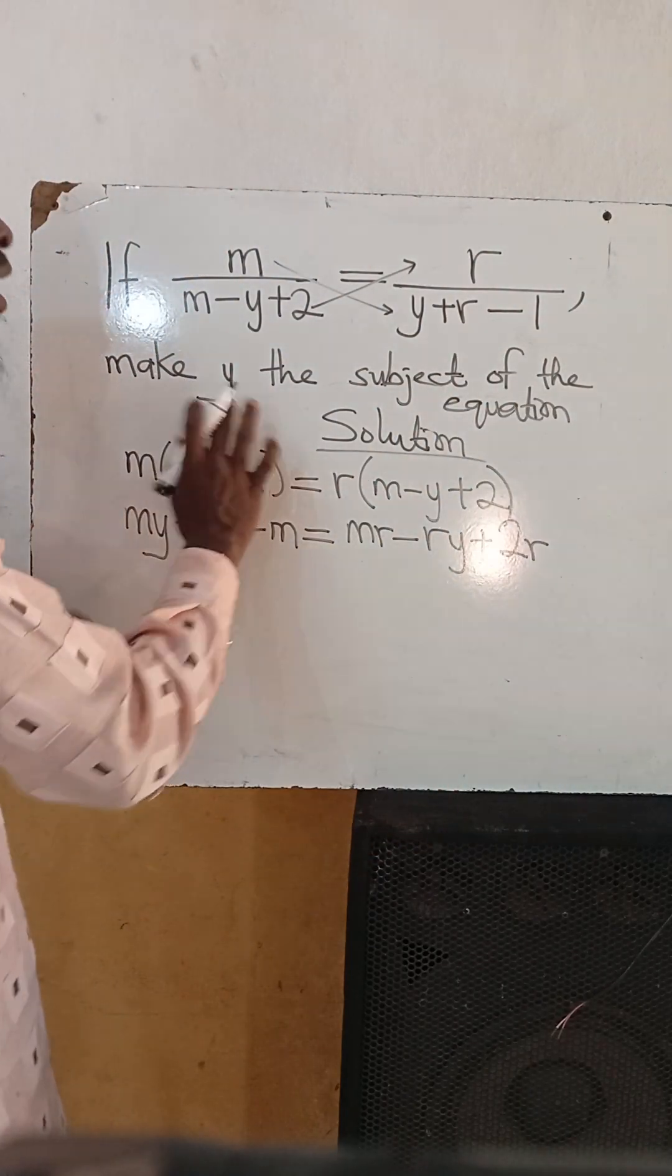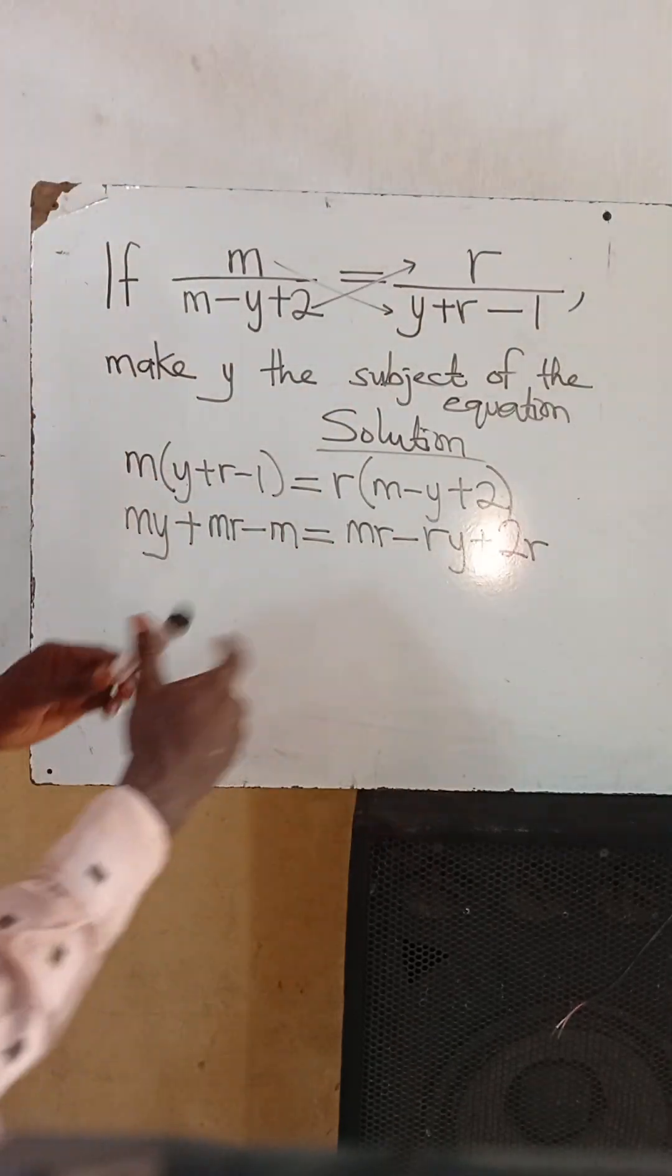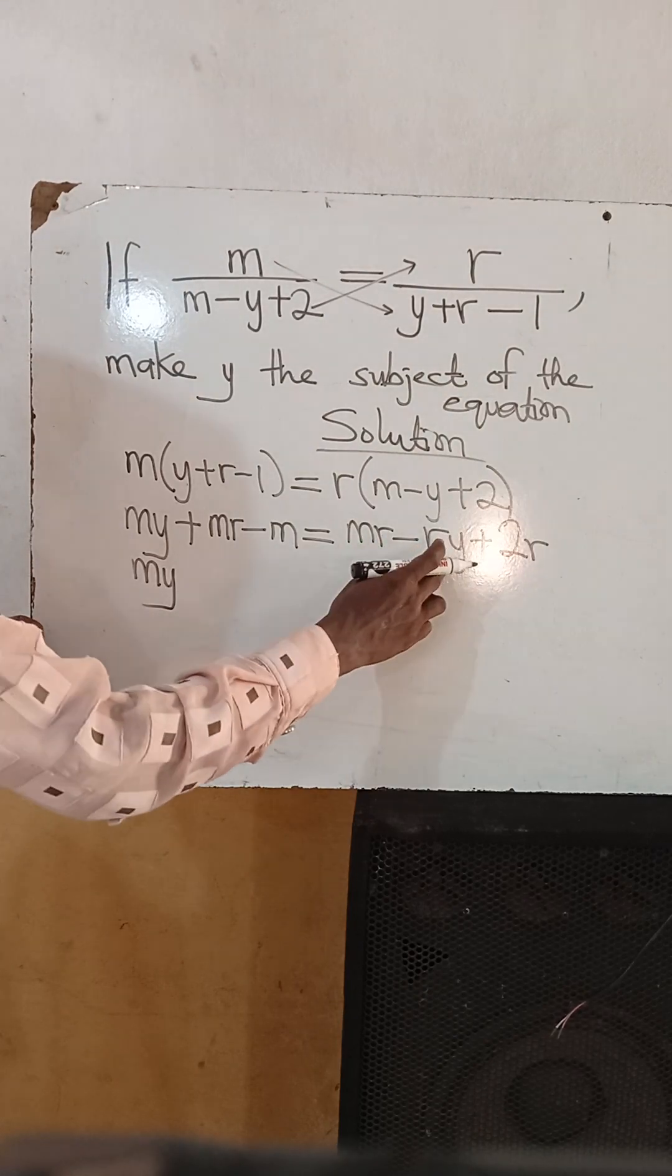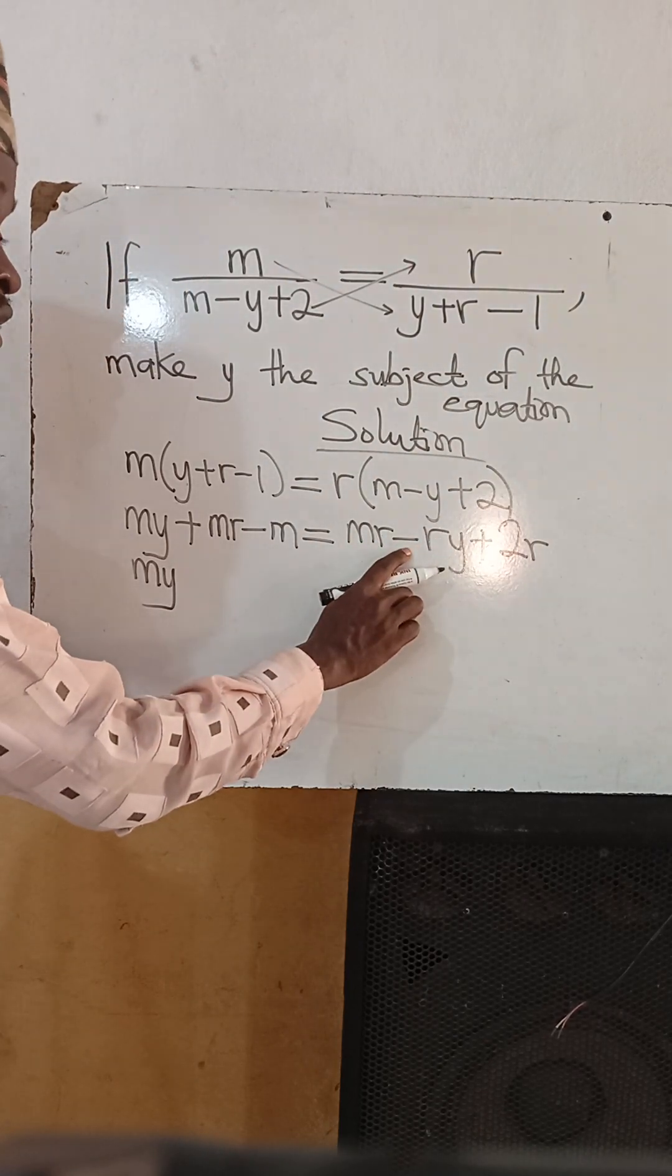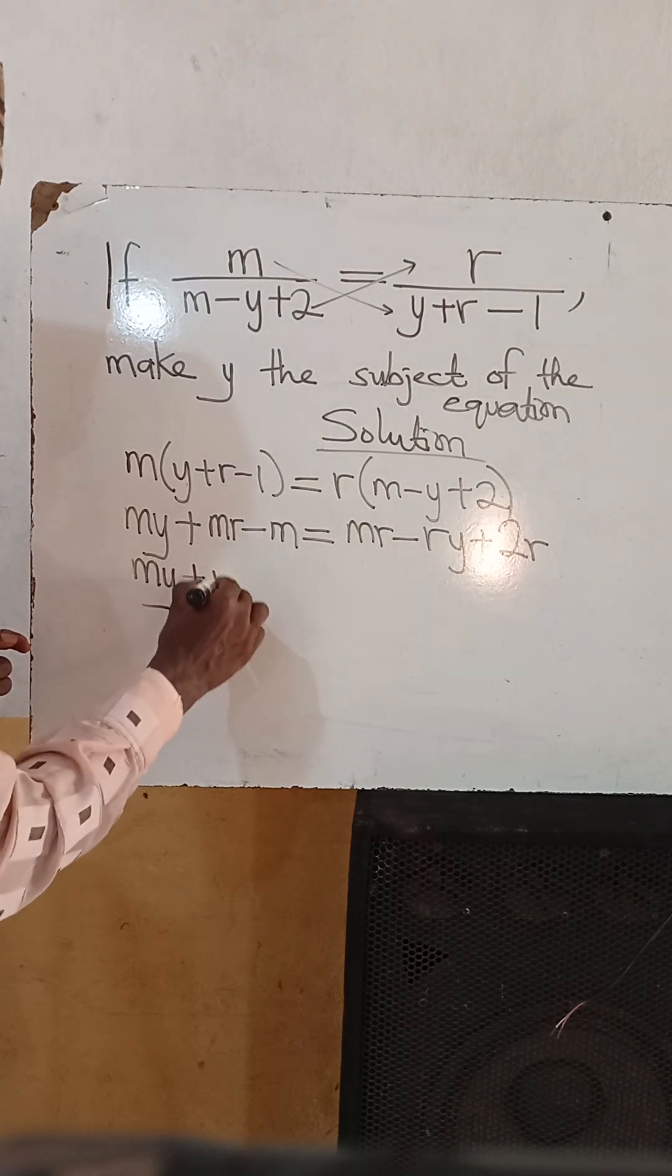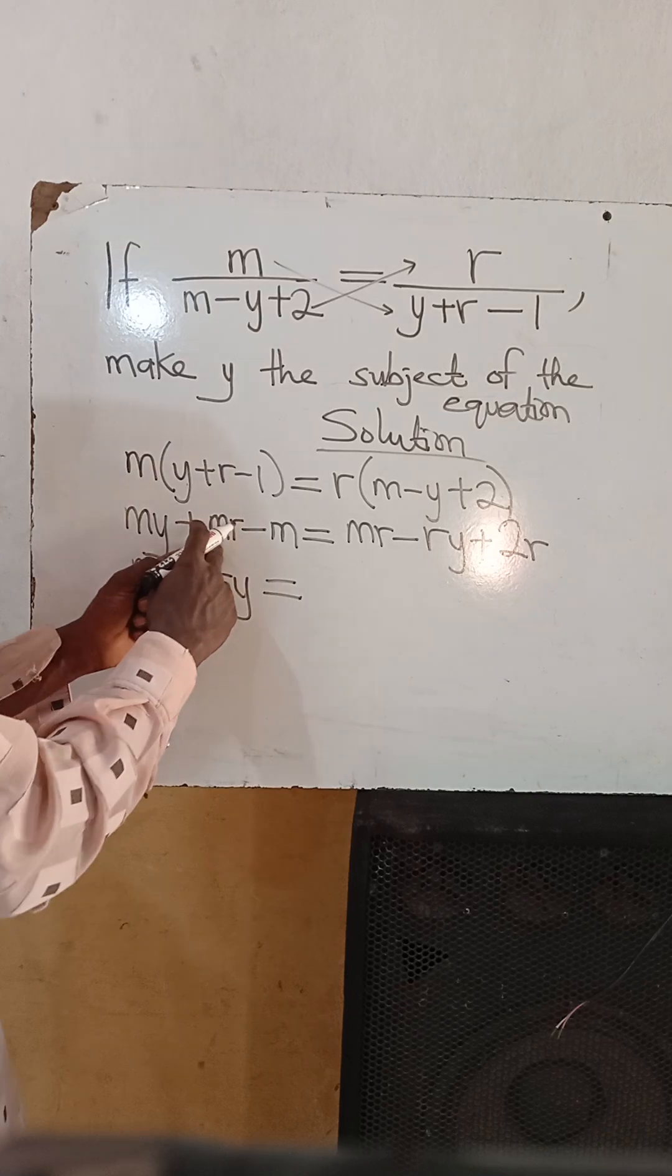Now we have to make y the subject of the formula. Let's gather the y terms together. I have my here, and another y term is ry here, but it has minus in the front. When it crosses this side, it's going to change to plus. Plus ry is equal to...